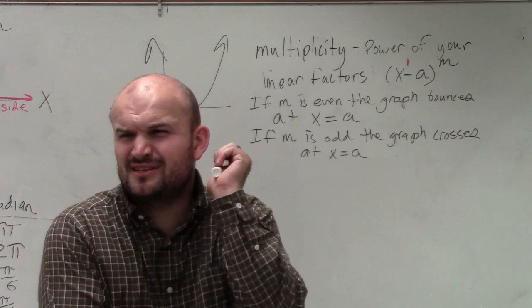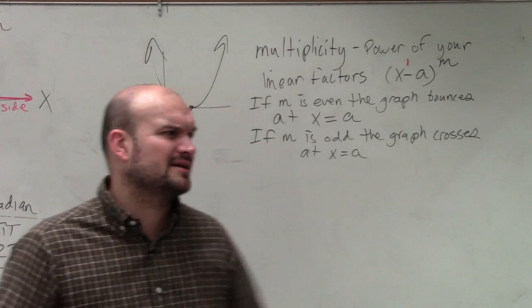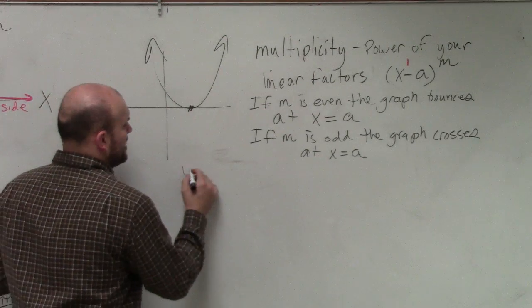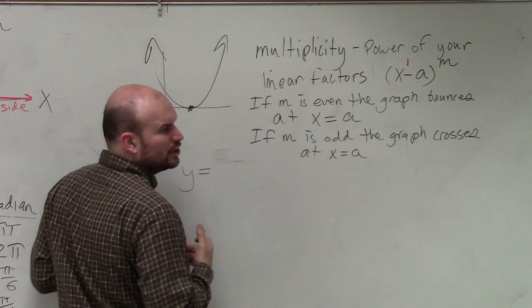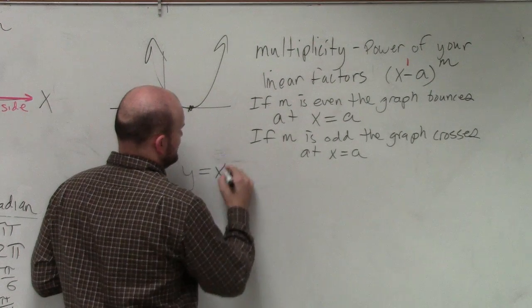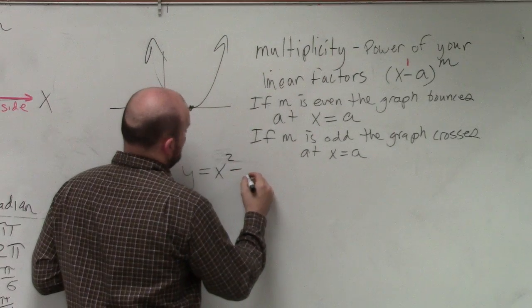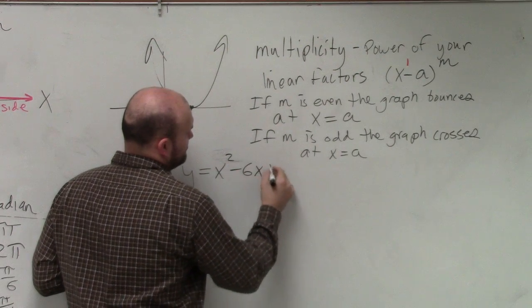So I just kind of write down some things a little bit. I'm not really sure how that's going to make some sense. So let's go into a problem. Y equals, let's see, what would be a good one? Y equals x squared minus 6x plus 9.